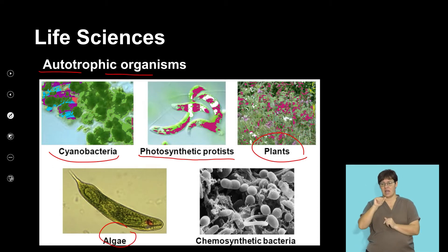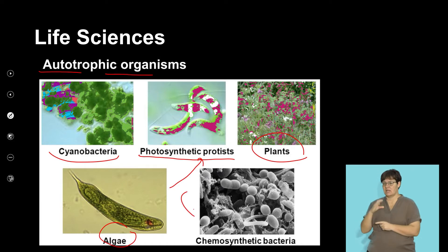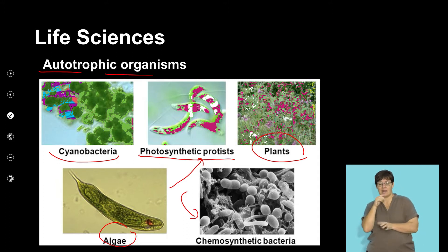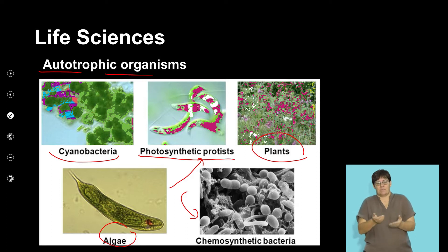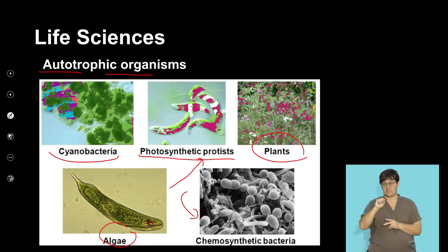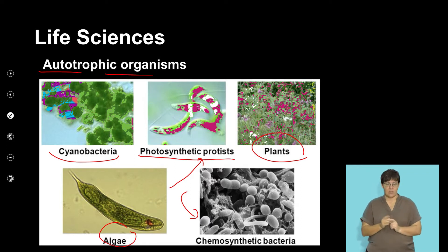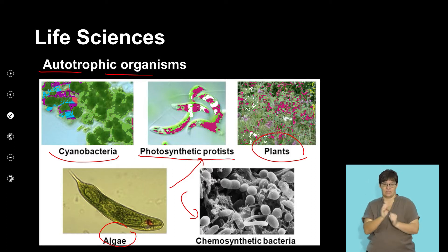Plants are your autotrophs that photosynthesize, and we mentioned algae as we discussed protists. We also have some chemosynthetic bacteria — these are bacteria that are able to use chemicals from the environment to produce energy, not necessarily using photosynthesis. So we refer to them as chemosynthetic, meaning they use chemicals to produce energy, as opposed to photosynthetic, which are those using light to produce energy.